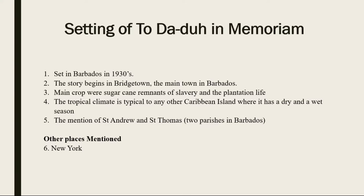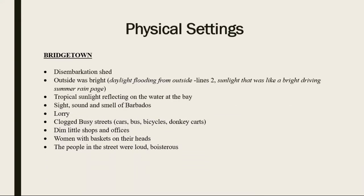Now that we have examined the setting of the short story, let us look at some of the different settings presented. When we talk about different settings we talk about the physical setting, the social setting or environment, the cultural one, and the economical one. For the physical setting we are going to start with Bridgetown. In Bridgetown we notice there is a disembarkation shed — this is where the travelers leave the boat — clearly indicating that this is where the pier is, so commercialization takes place here.